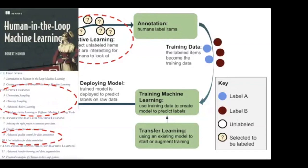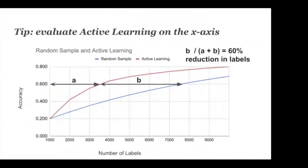All the examples today are drawn from my book, Human in the Loop Machine Learning. I'll concentrate mainly on chapters three through six for active learning, with some examples from sections on advanced quality control and user interfaces for data annotation. Stay tuned to the end of the talk for a discount code for 50% off the book. Before jumping into examples, a couple of tips for those coming from a machine learning background, because active learning differs in key ways from standard ML evaluation.